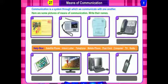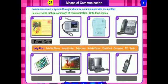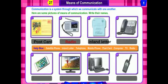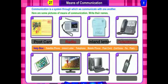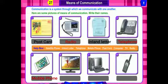First picture — what is this? It is a postcard. Number 2, you can see radio. Number 3 — which picture is it? It is an inland letter. Number 4, you can see telephone. Number 5 is mobile phone. Number 6 — which picture is it? It is television, TV.